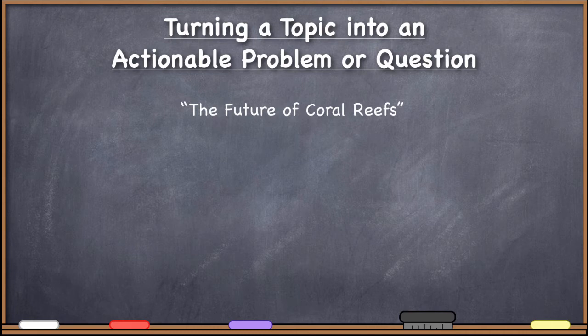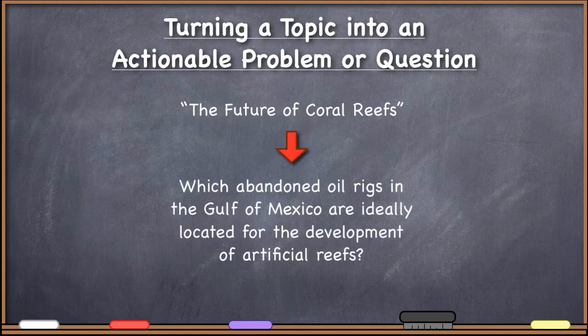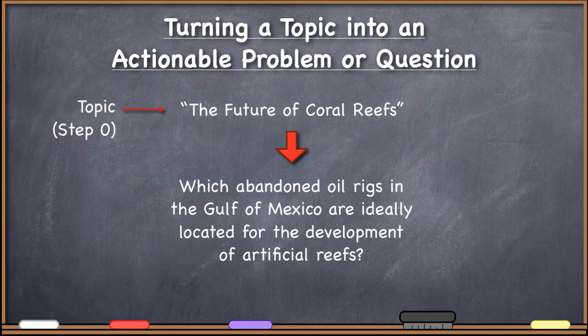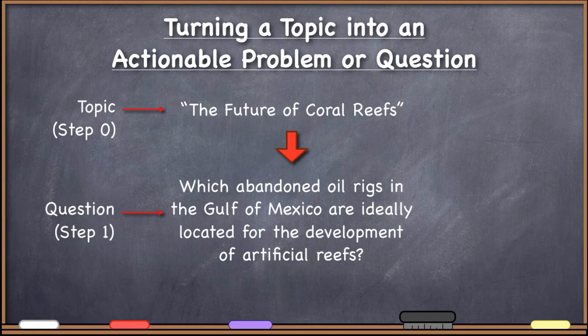He did an excellent job. He went from just this topic — 'the future of coral reefs' — to this very specific question: 'Which abandoned oil rigs in the Gulf of Mexico are ideally located for the development of artificial reefs?' Do you see the difference? This is a topic — step zero. This is a question — step one. If you just have 'the future of coral reefs,' fantastic great topic, but know where you are: you're not ready to move on to step two.